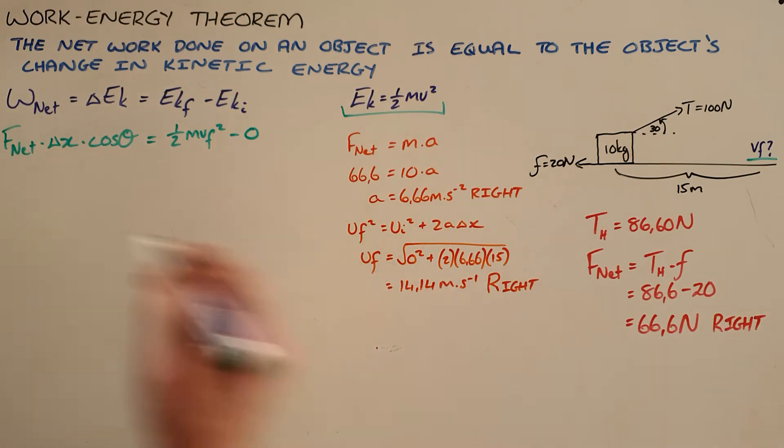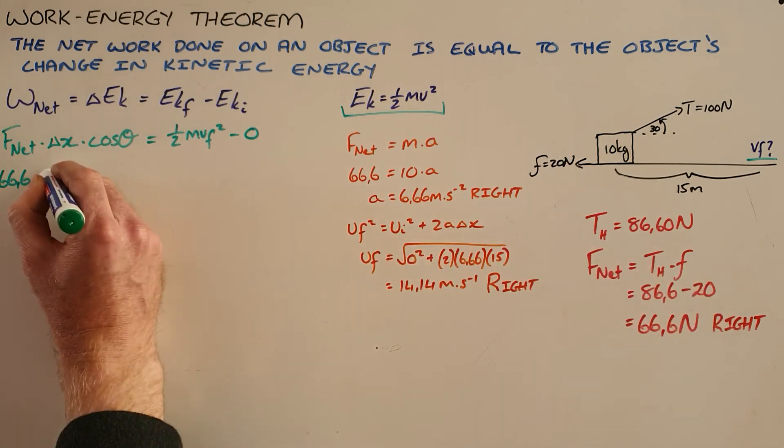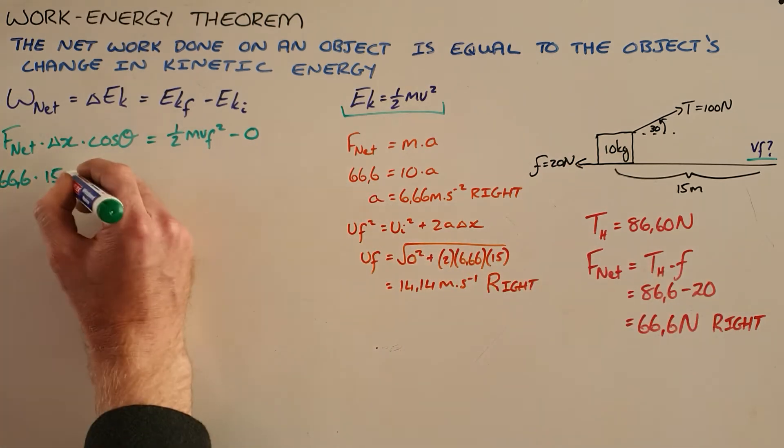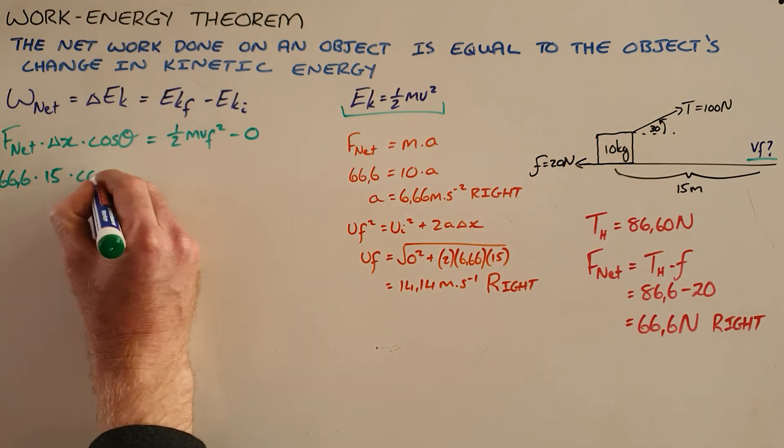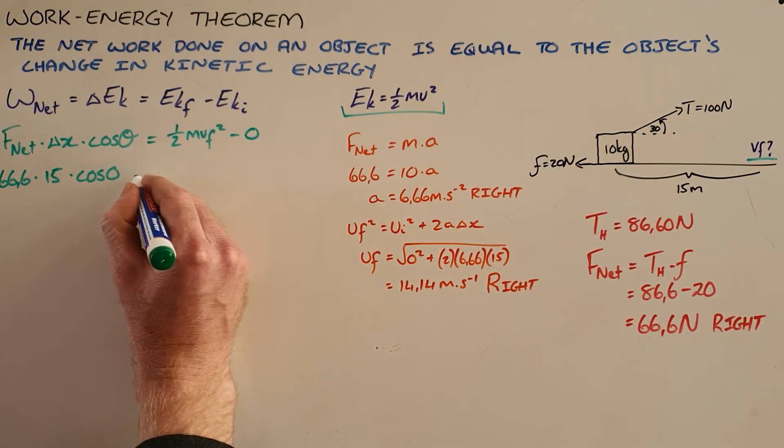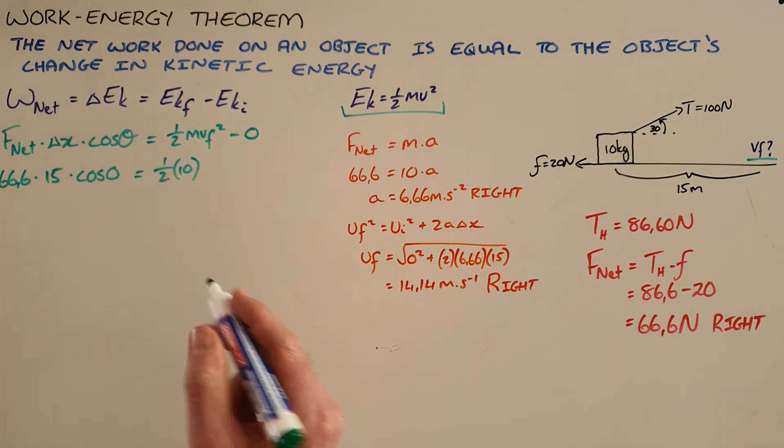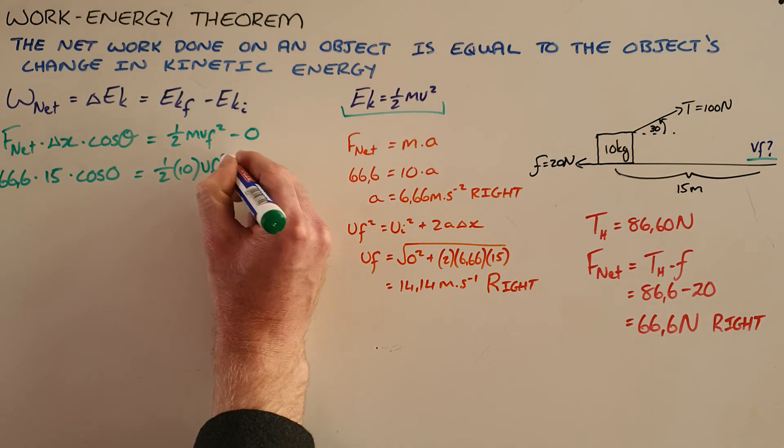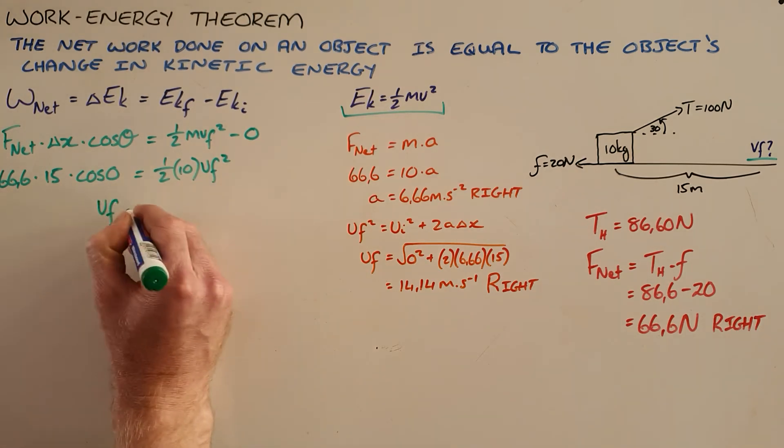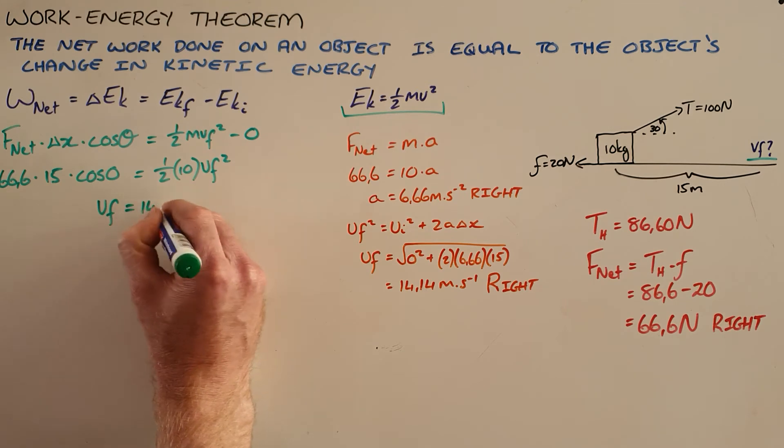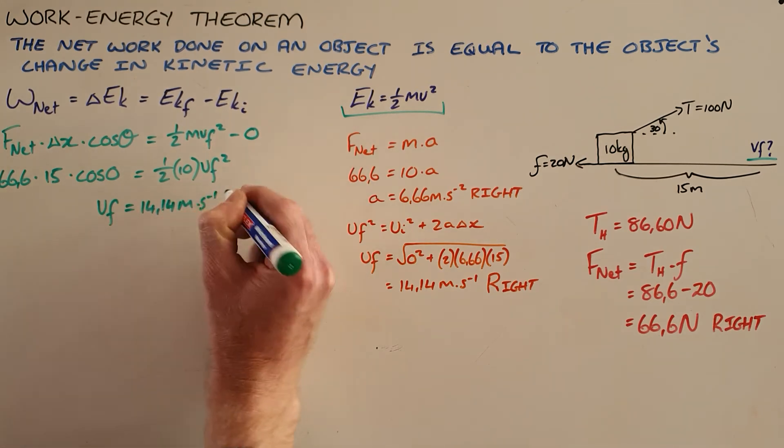Our net force, as we've calculated here, is 66.6 Newtons. The displacement, we've been told, is 15 meters, and the net force and the displacement are in the same direction, so the angle between them is zero. And we have the mass of the object given as 10 kilograms, and then the final velocity is the only unknown here, where we can solve for our final velocity to find that it is 14.14 meters per second to the right.